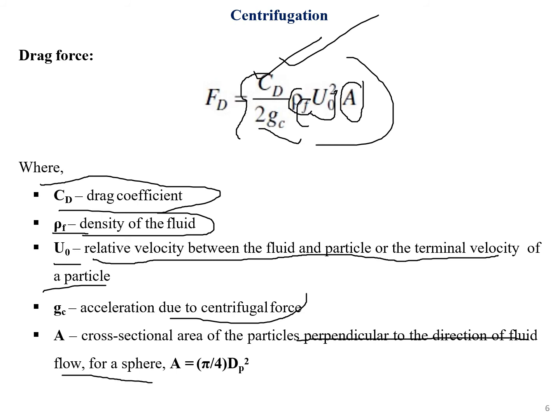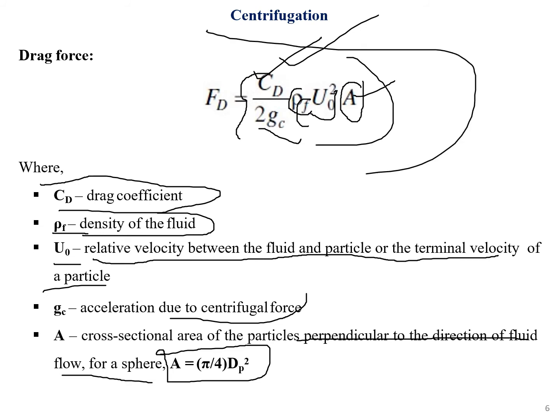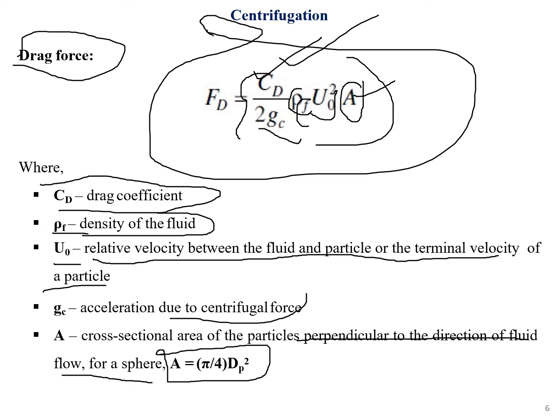Since particles are treated as spheres, the cross-sectional area A is given as (π/4) × dp². This completes the derivation of the drag force equation.